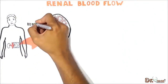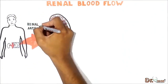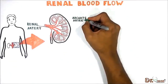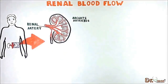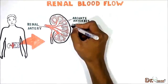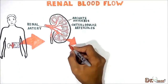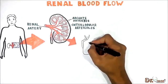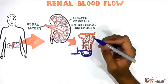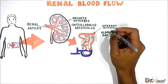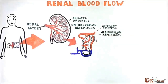The blood enters the kidneys via the renal arteries, which adjourn to form the arcuate arteries. Then blood flows to the interlobular arterioles, then to the afferent arterioles, which in turn pass to the glomerular capillaries. This capillary system forms the glomeruli.